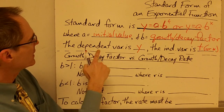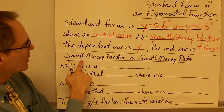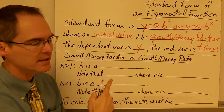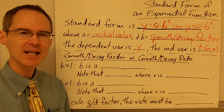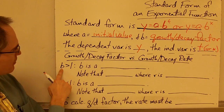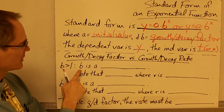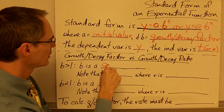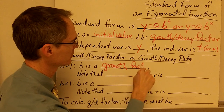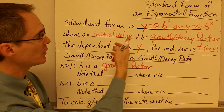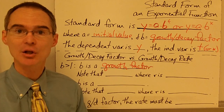There's this thing called the growth or decay factor, and it's related to something called the growth or decay rate — but they're not exactly the same. If b is greater than 1, then b is called a growth factor. That's the situation when your exponential function represents something that is growing, something that's getting larger.